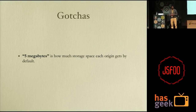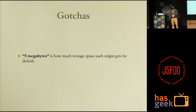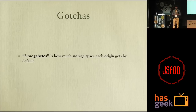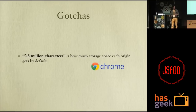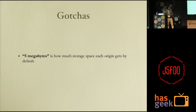A fact about the local storage API is that it only offers about 5 megabytes of storage space in the browser. Since you can only store strings, and each character occupies one byte, you get to store 5 million characters. However, in Chrome, which uses UTF-16 encoding with two bytes per character, you only get 2.5 million characters. This is really constraining.